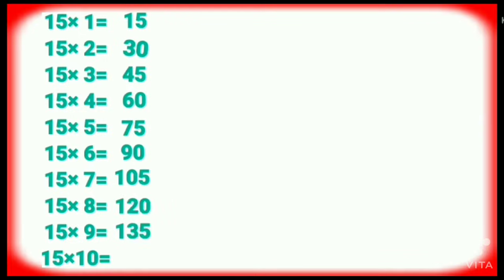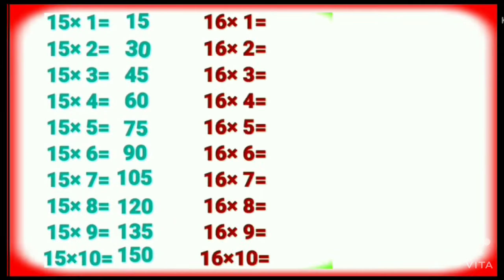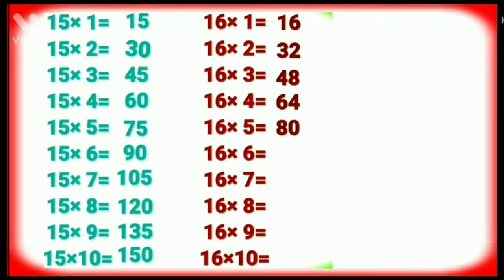Fifteen nines are one thirty-five. Fifteen tens are one fifty. Table of Sixteen. Sixteen ones are sixteen. Sixteen twos are thirty-two. Sixteen threes are forty-eight. Sixteen fours are sixty-four. Sixteen fives are eighty. Sixteen sixes are ninety-six. Sixteen sevens are one twelve.